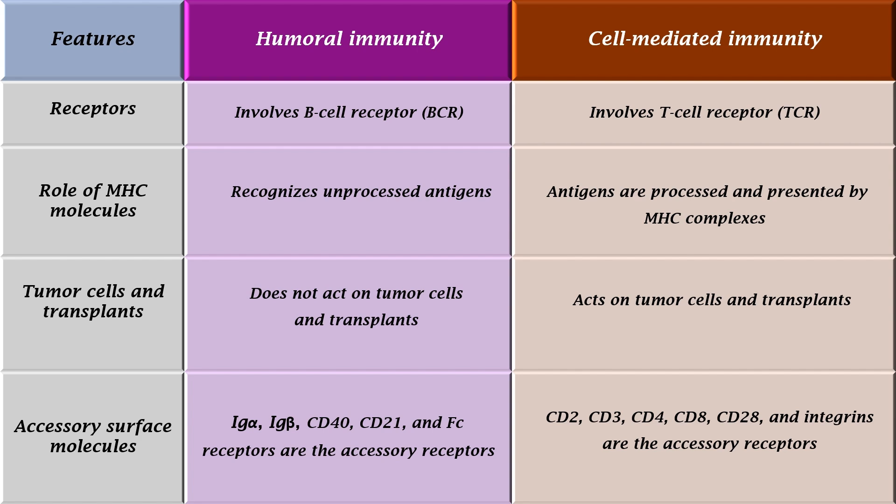Humoral immunity involves the B-cell receptor and recognizes processed antigens presented by MHC complexes. The accessory receptors of humoral immunity include Ig-alpha, Ig-beta, CD40, CD21, and Fc receptors, while CD2, CD3, CD4, CD8, CD28, and integrins are the accessory receptors of cell-mediated immunity.